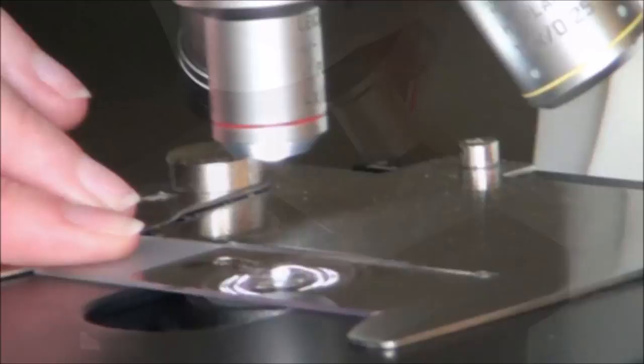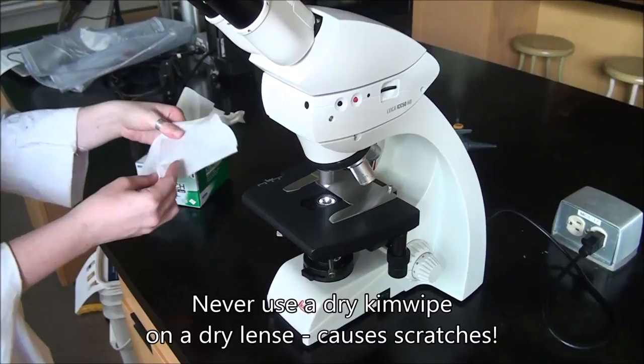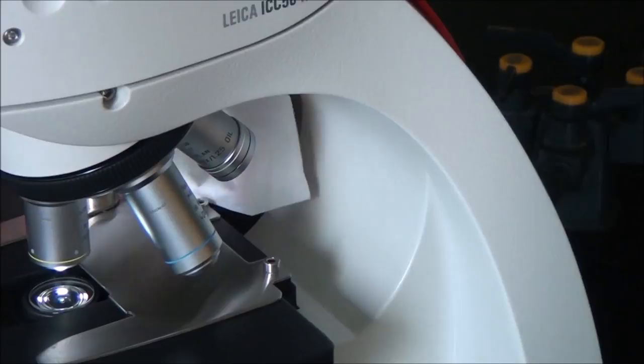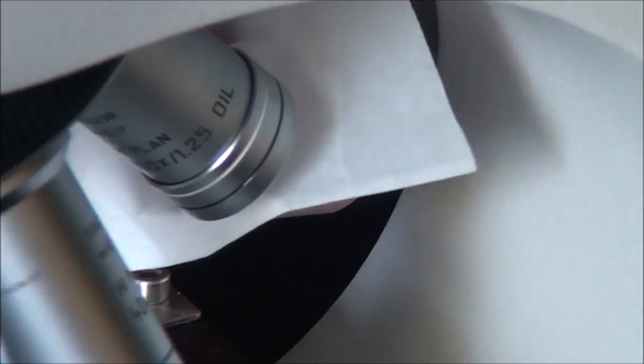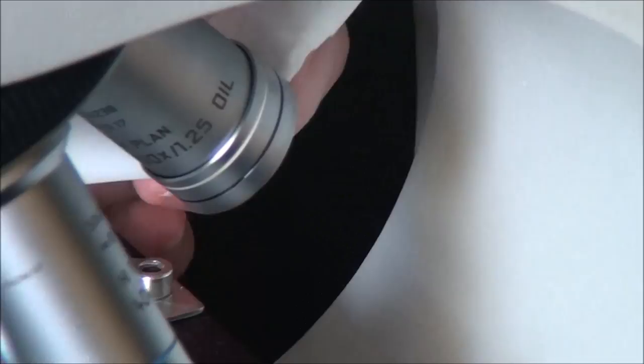Once the slide is put away, we do need to clean off the oil immersion lens using Kim wipes, which is an optics-grade paper. We're just going to move this out of the way a little bit more, and then we're going to use a circular motion to wipe the oil off the oil immersion lens. We do that three times just to make sure we get all the oil off, just a gentle slight circular motion.